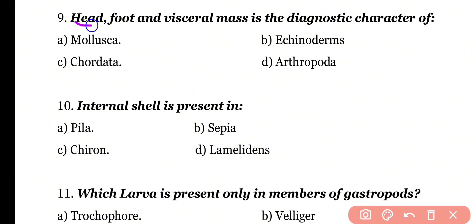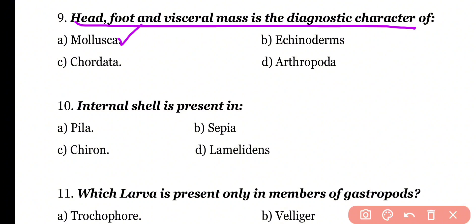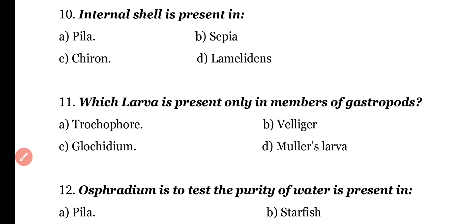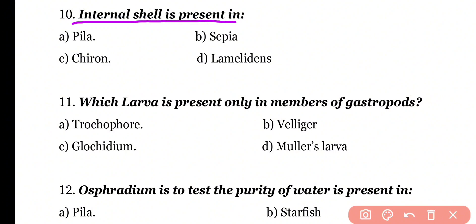Question number 9: Head, foot, and visceral mass is the diagnostic character of which phylum? Options: Mollusca, Echinoderms, Chordata, Arthropoda. Correct answer is option A. The body of Mollusca is divided into head, foot, and visceral mass.